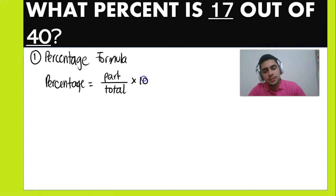The part is always going to be the first number they give you. For example, in this case, what percentage is 17 out of? So 17 is going to be the part, and out of refers to the total. So in this case, 40 is going to be the total. And then you multiply by 100 percent. Usually, but not always, that bigger number is going to be the total or the whole.